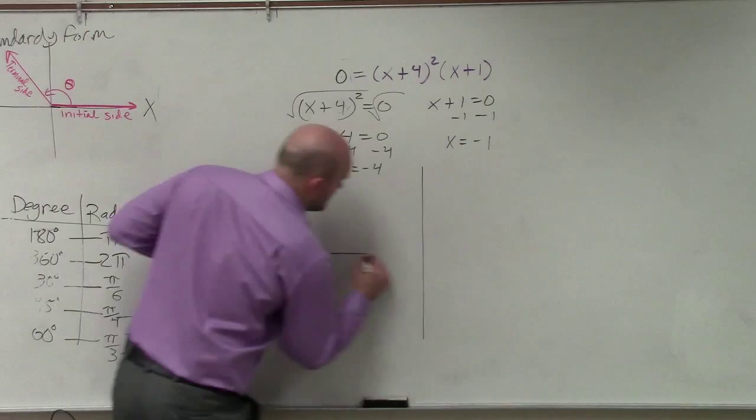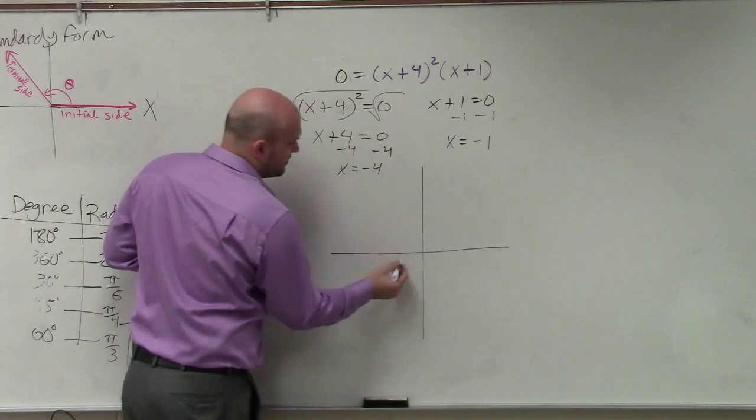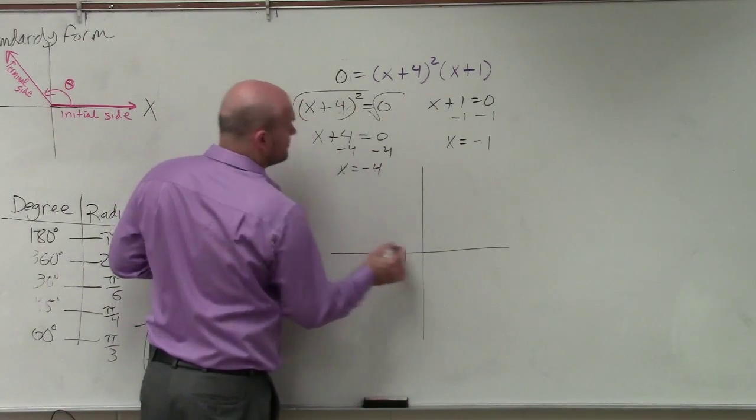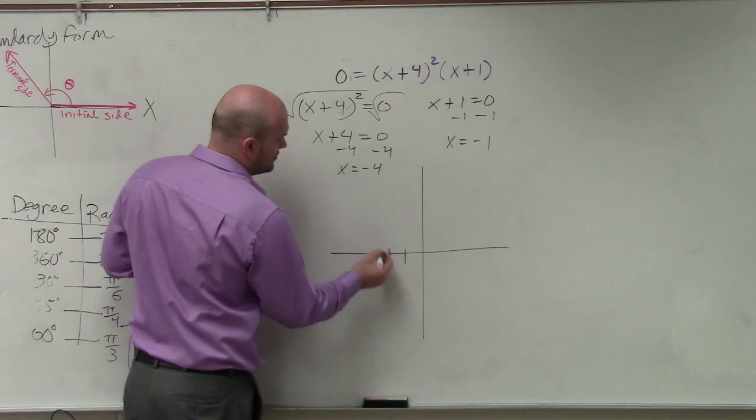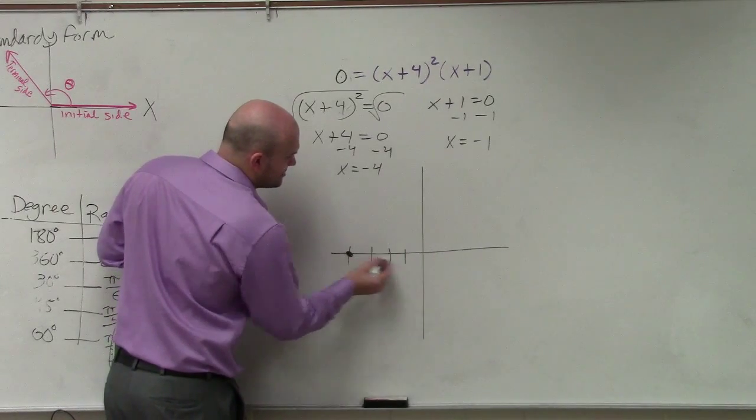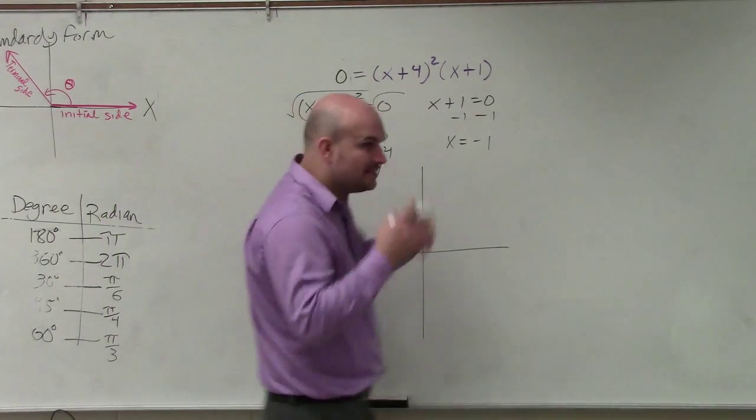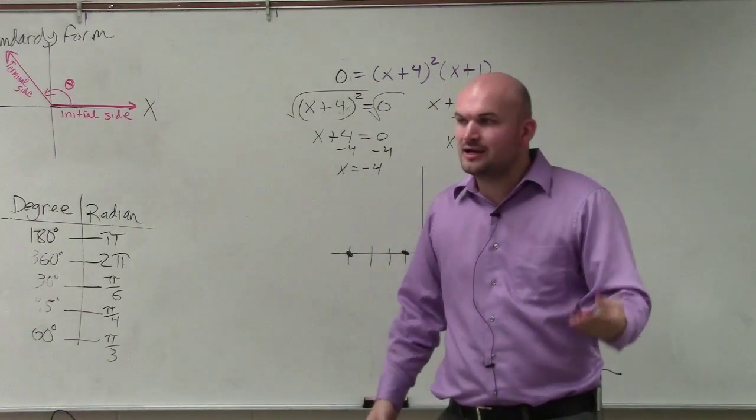So we go to negative 1 and then negative 4. 1, 2, 3, 4. So we have these nice little points here. But to graph this, there's two things that need to come into play.